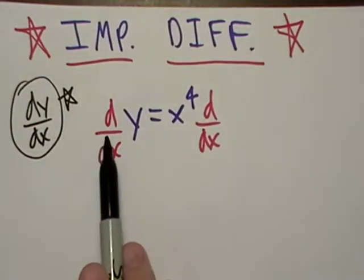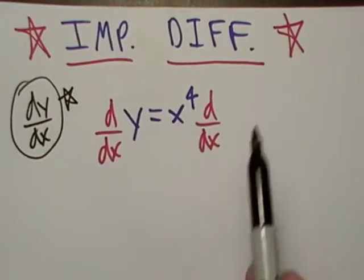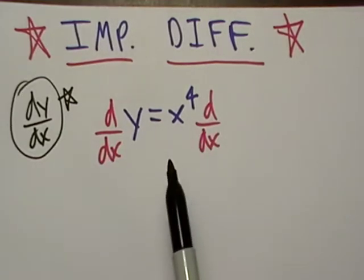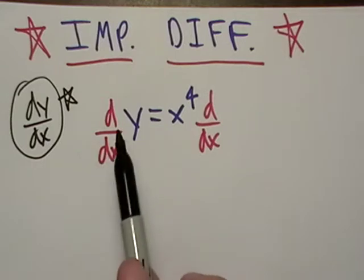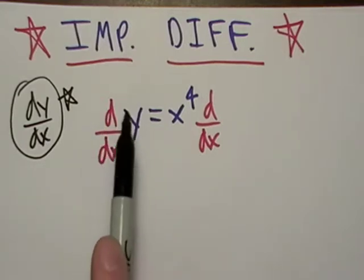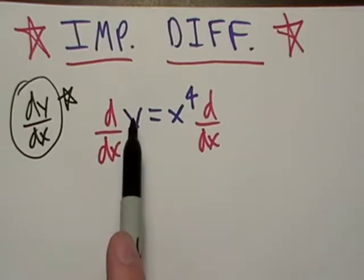All right, so I take the derivative of both sides of this simple function. And what ends up happening is I take the derivative of y. But see, here's the thing.